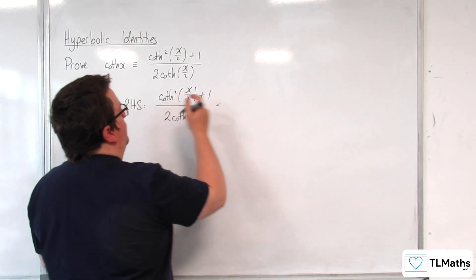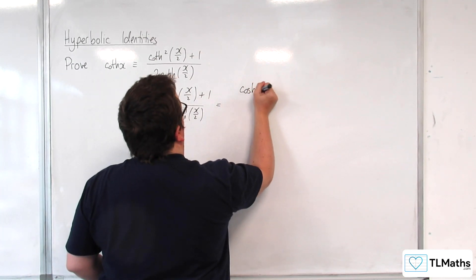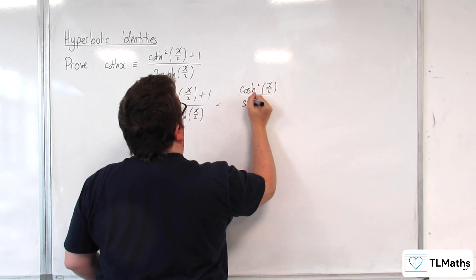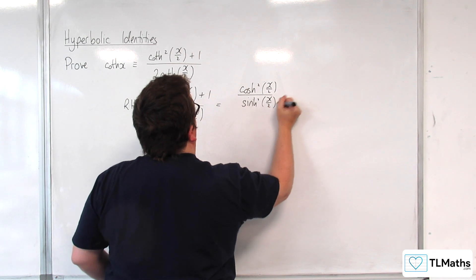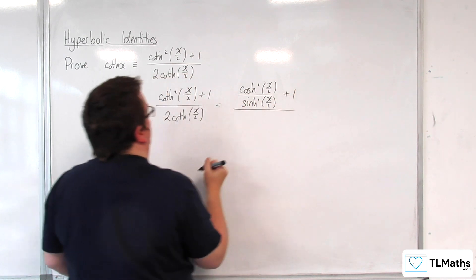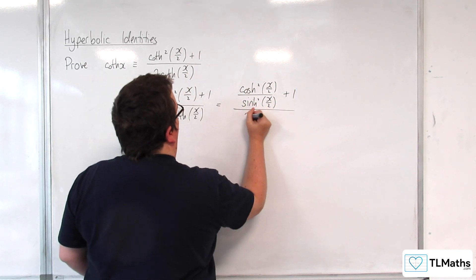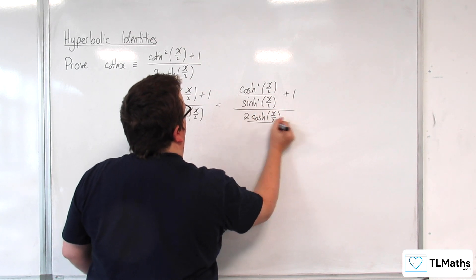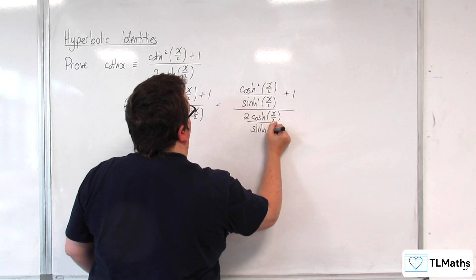So here we've got cosh squared x over 2 over sinh squared x over 2 plus 1. So that's our numerator. And in the denominator, we've got 2 cosh x over 2 over sinh x over 2.